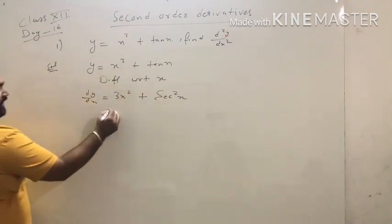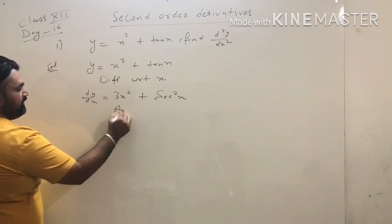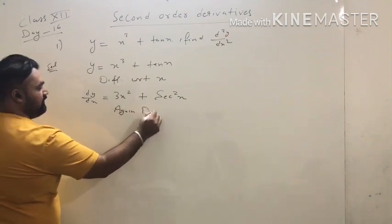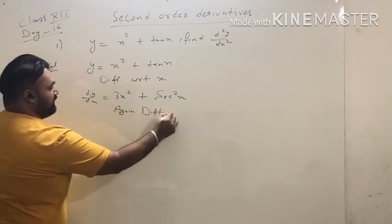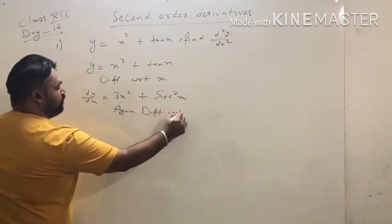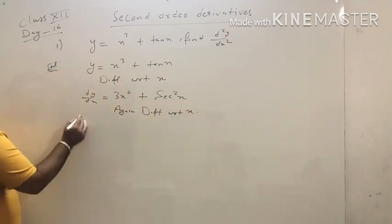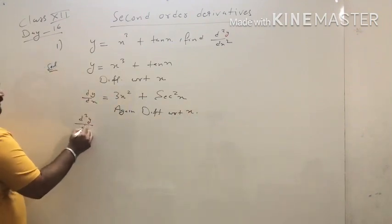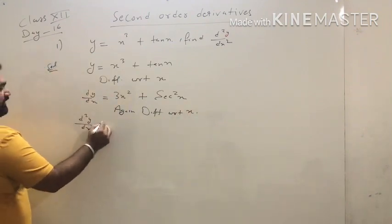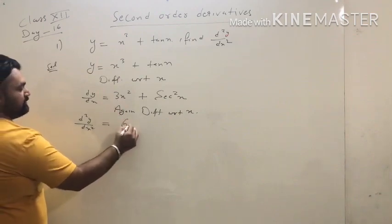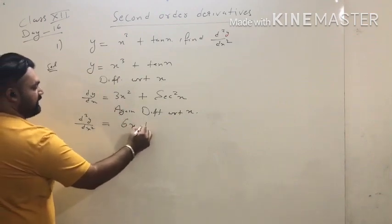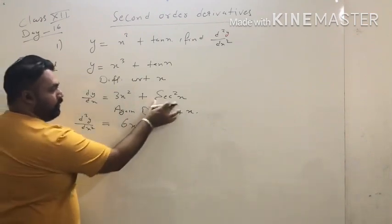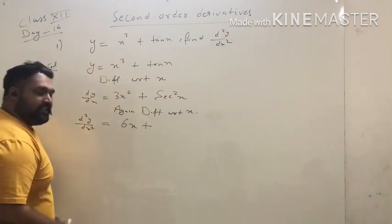Now again differentiate with respect to x. So d²y/dx²: the derivative of 3x squared becomes 6x. Now for secant squared x: